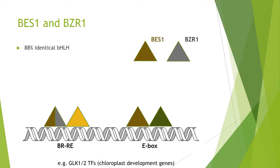A bit more on transcription factors BES1 and BZR1: they are 88% identical in amino acid sequence and are basic helix-loop-helix proteins, with the basic region being positively charged and so interacting specifically with DNA. Both bind to the brassinosteroid response element, and BES1 also interacts with an E-box — in both cases as part of a mixed heterodimer. The genes they control include chloroplast development genes GLK1 and GLK2, which are themselves transcription factors, creating a transcriptional cascade.